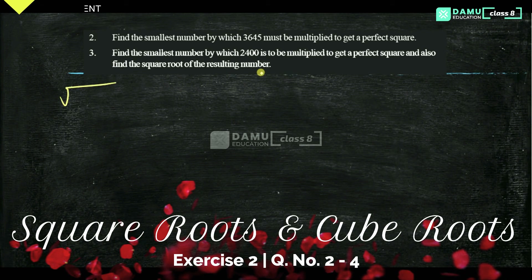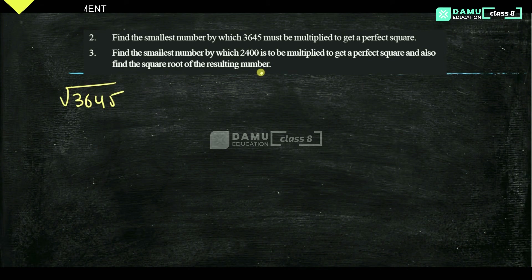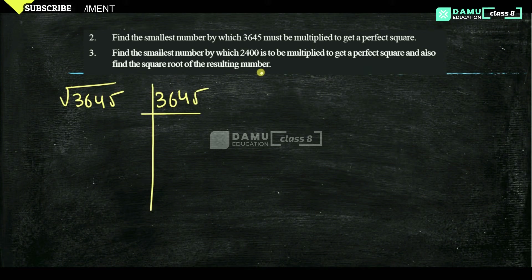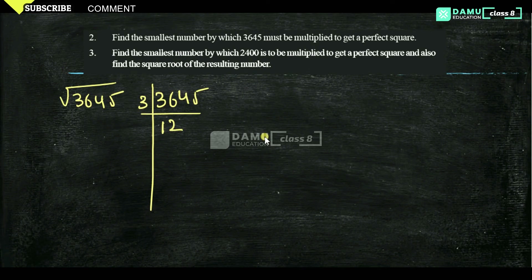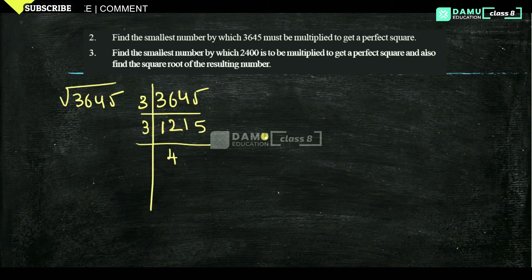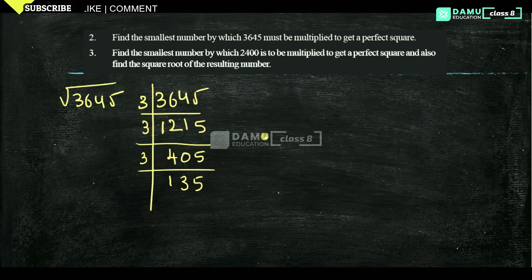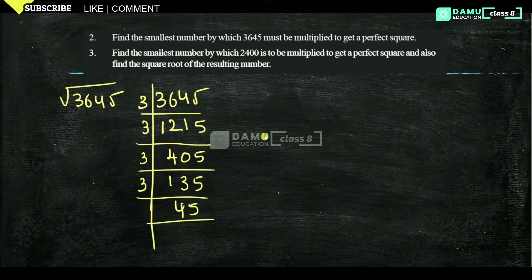So let's take the square root of 3,645. Is that a perfect square? If it is, then you will get numbers in the format of pairs. It is not divisible by 2, so we check divisibility by 3. Going through repeated division by 3, we find that 3,645 = 3 × 3 × 3 × 3 × 3 × 3 × 5.